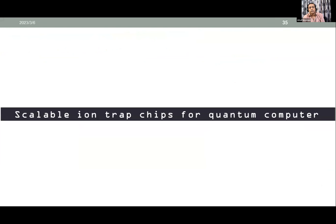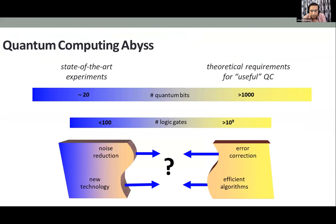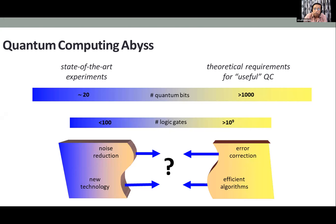Moving towards chip design for quantum computers. There is a 'quantum computing abyss': current state-of-the-art experiments can trap 20–40 ions, but the theoretical requirement for a useful quantum computer may be thousands of ions. Other important parameters for full-scale quantum computation include noise reduction, error correction, efficient algorithms — people worldwide are working on these challenges.